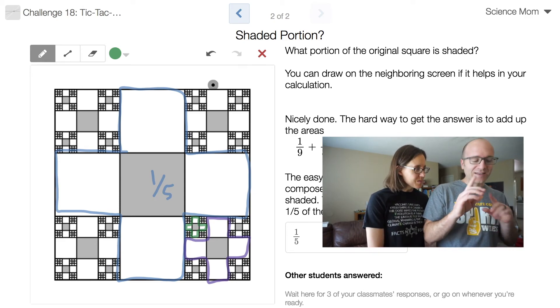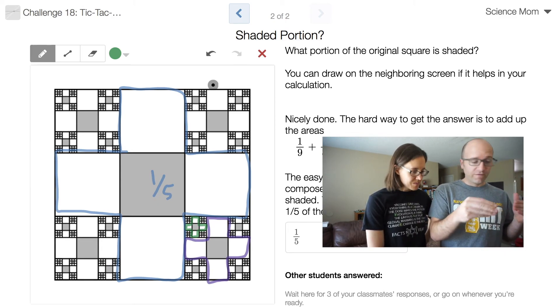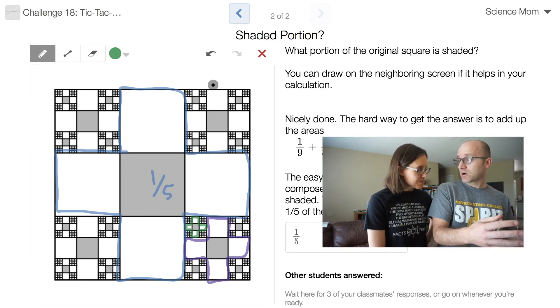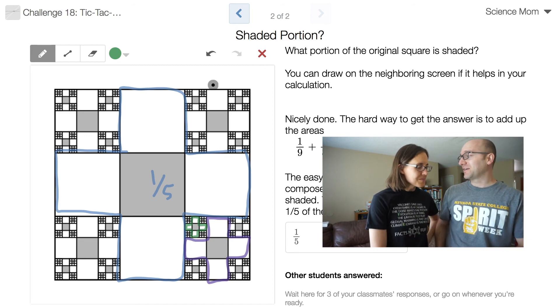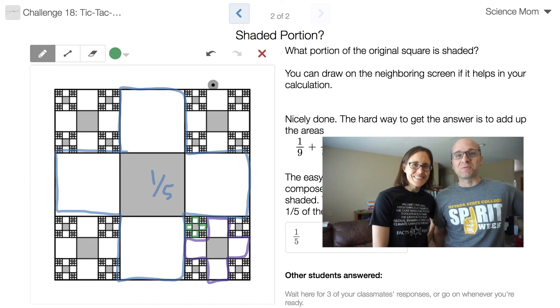But the idea of the problem that I wanted you to get was that you could break it down into smaller figures. In this case, we have these crosses, and the entire figure is composed of these crosses. One fifth of each of those is shaded. And that's exactly how to arrive at the conclusion. Well done, Science Mom.